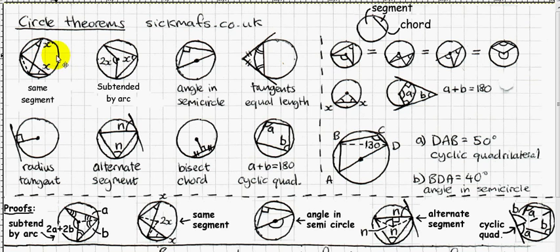So if I make another angle starting from here, up to the circumference and back down, that angle would be equal to both of the other angles. They're all equal to each other.